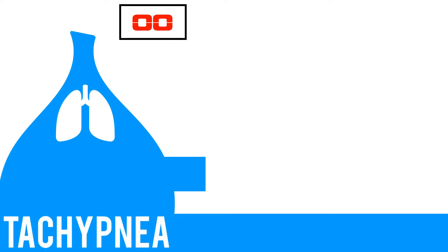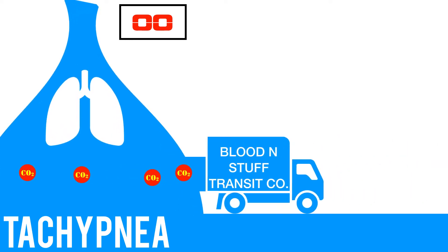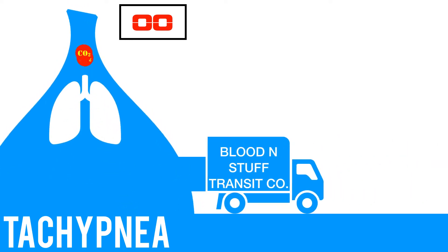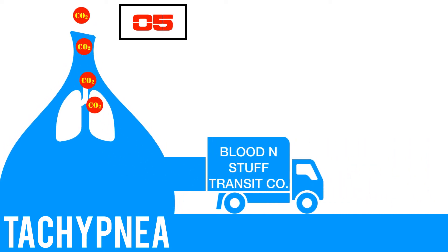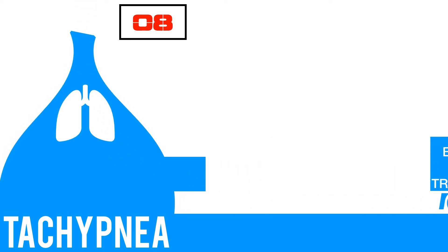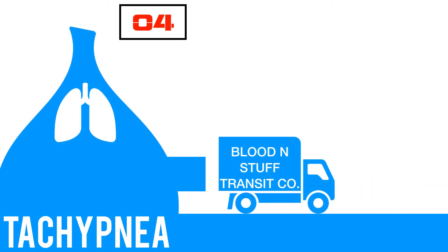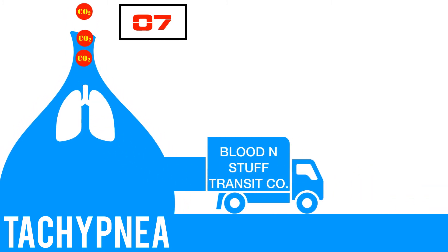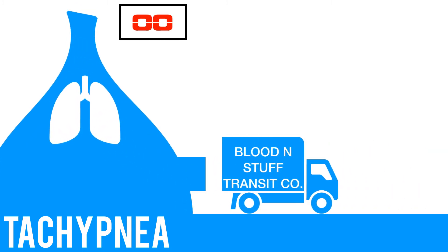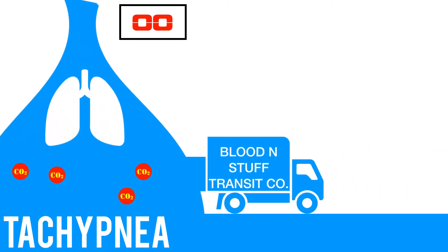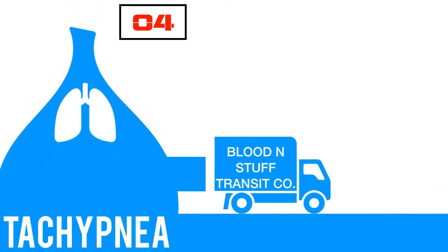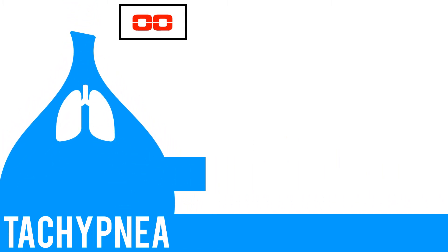Now, tachypnea — fast breathing rate. Let's increase the ventilatory rate and see what happens: eight. By the end of exhalation we got up to eight. Whereas before, with a slower rate, we had more time to collect CO2 molecules in the lungs before they were exhaled; now we only get a couple truckloads in before the CO2 gets kicked out. So eight was our total for tachypnea.